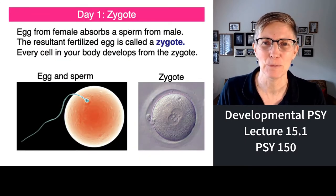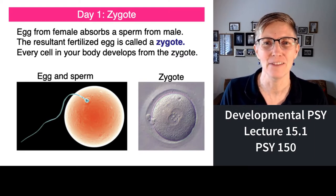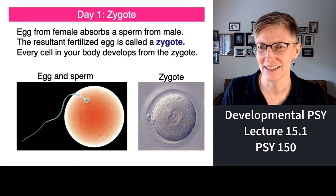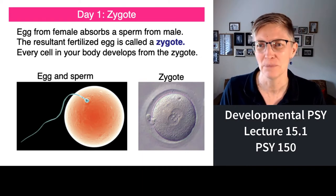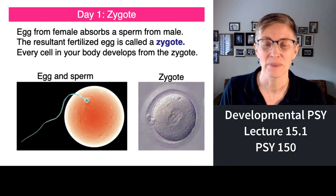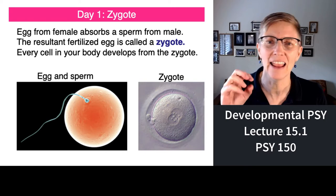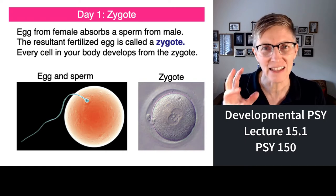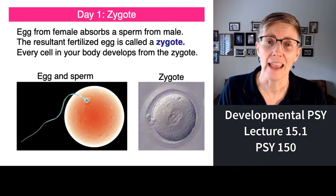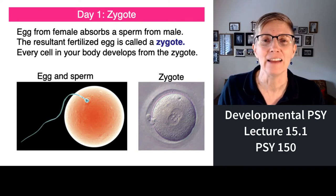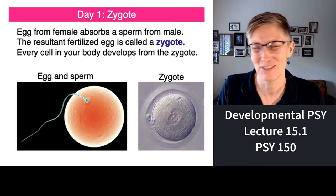Let's talk about the zygote. If somebody took a picture of you on the very first day of your existence, you would look like a zygote. Before you were even a zygote, you'd look like one sperm and one egg. What happens is the sperm gets near the egg, and the egg selects one of the sperm and sucks it in. The egg is now considered fertilized and becomes a zygote — that's your first day of life.